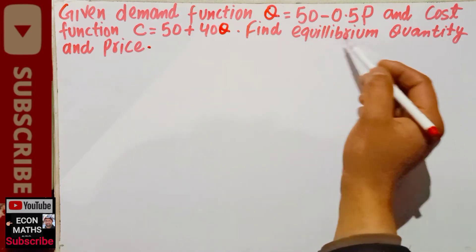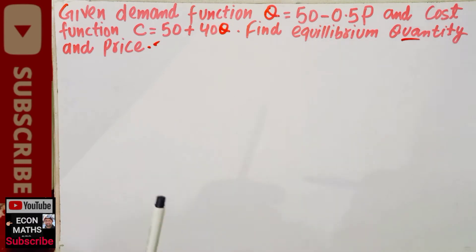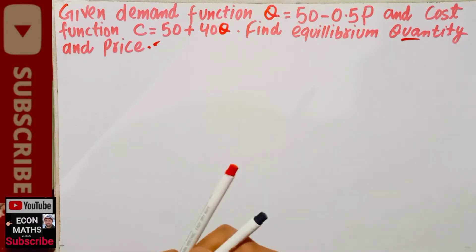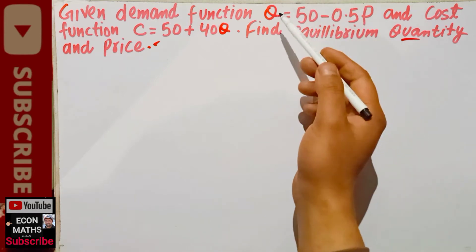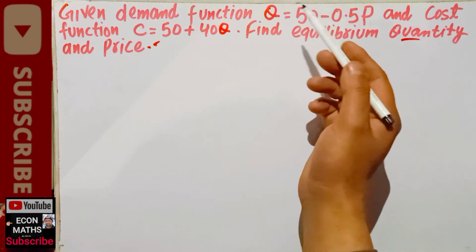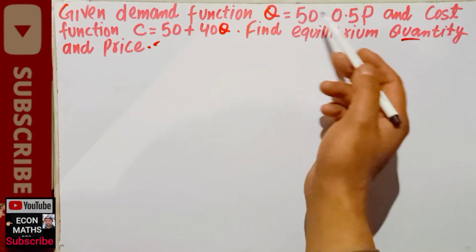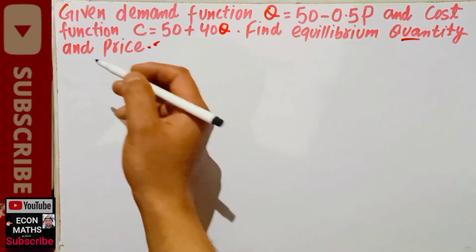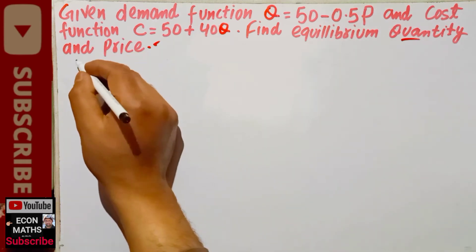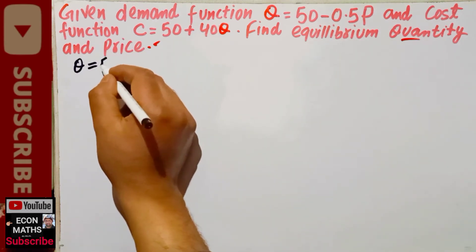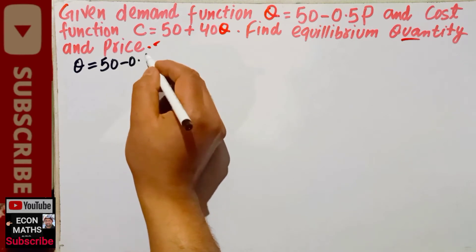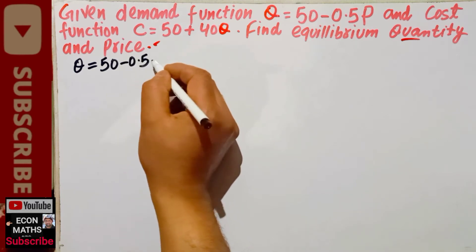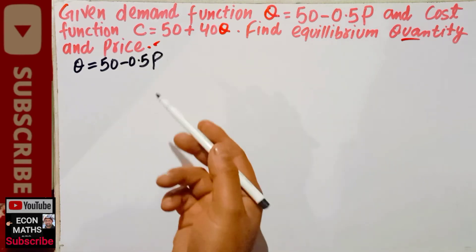We have to find the equilibrium quantity and price. First of all, we will write the given demand function. Since it is given in Q, we will solve it for P — so we will form the inverse demand function. Our Q is given as Q = 50 minus 0.5P.